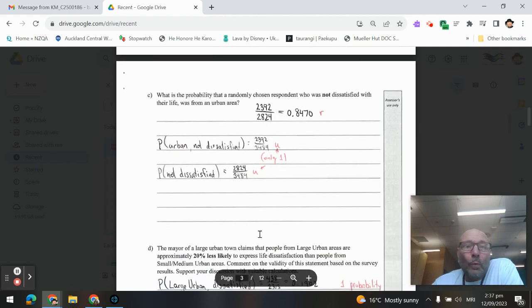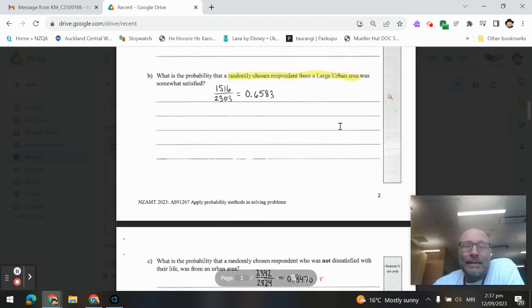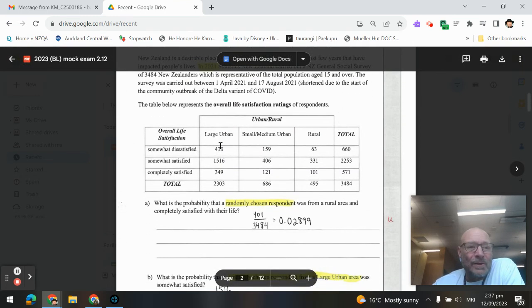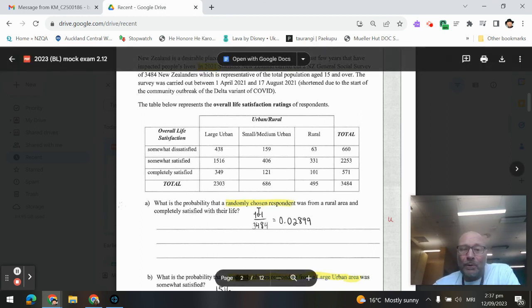Next one: What's the probability that a randomly chosen respondent who was not dissatisfied with their life was from an urban area? Unpacking that, we're looking for respondents who were not dissatisfied. So if these were somewhat dissatisfied, you couldn't choose them. Somewhat satisfied and completely satisfied - these two rows are going to make up our category of not dissatisfied. Also said, from an urban area: large urban, small, medium urban.